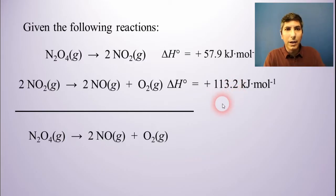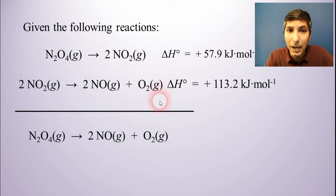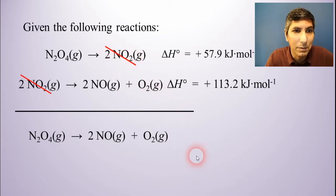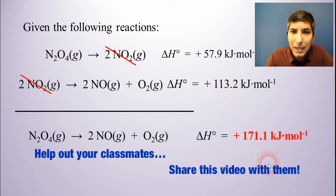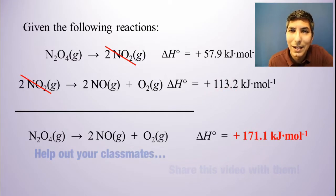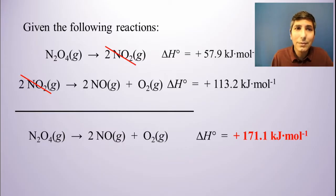Now if I play my cards right, I think these first two equations will now add up to get me the new equation, equation number three. And I see that because the two NO2s will cancel out on both sides. Everything else works out, and so to find the delta H, I just have to take 57.9 plus 113.2, and I get 171.1 kilojoules per mole. So that's another way to calculate delta H using Hess's law.